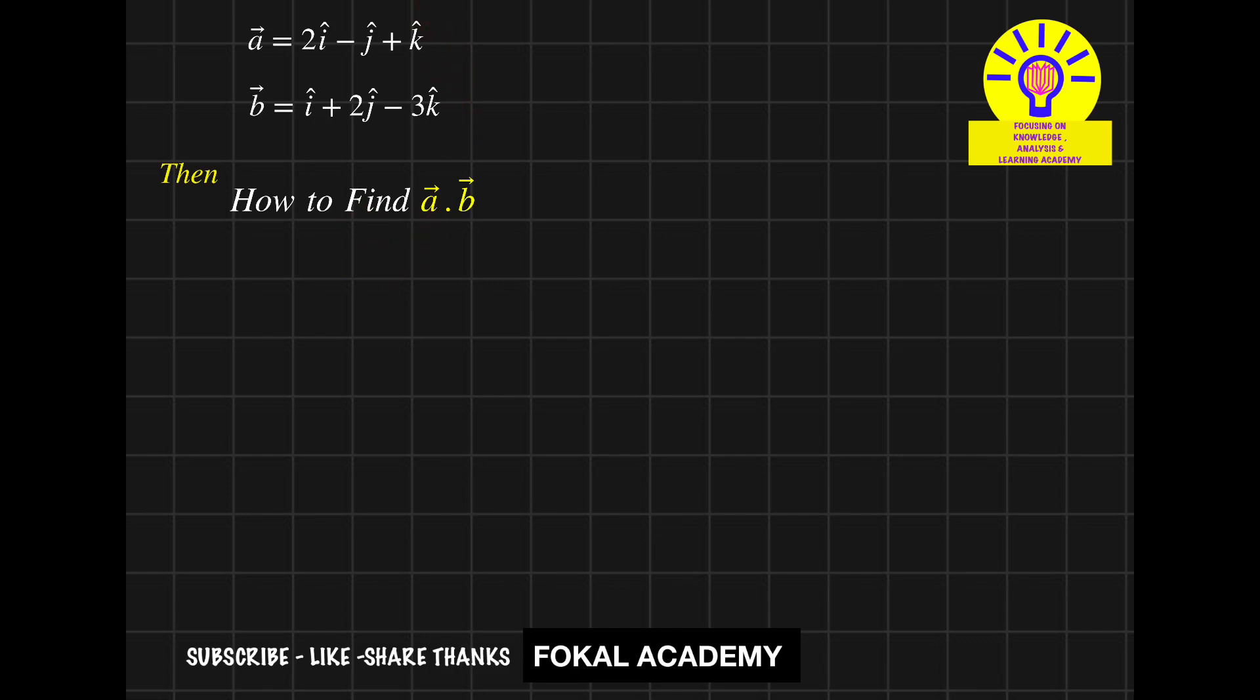So we know that dot product is vector A dot vector B. Here i-cap is there, here i-cap is there. So we take the product of corresponding magnitudes: 2 into 1 is 2, plus